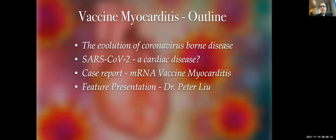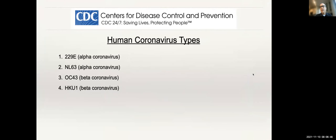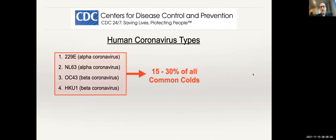It's worthwhile to understand the concept of SARS-CoV-2 as a cardiac disease. The mRNA vaccine was specifically engineered to express the surface protein of this virus, which makes it easier to understand the pathophysiology of mRNA vaccine myocarditis. The coronavirus was first identified in the mid-1960s and was typically considered a harmless propagator of the common cold, constituting about 15 to 30% of all common colds.